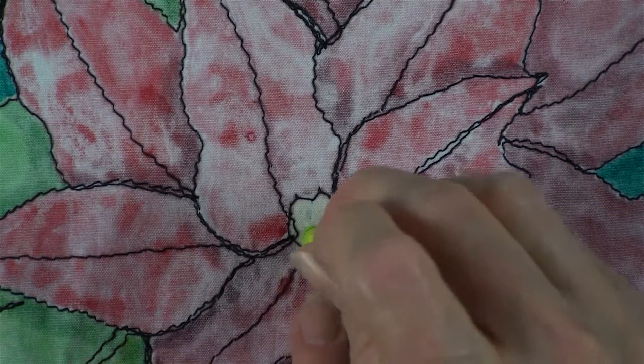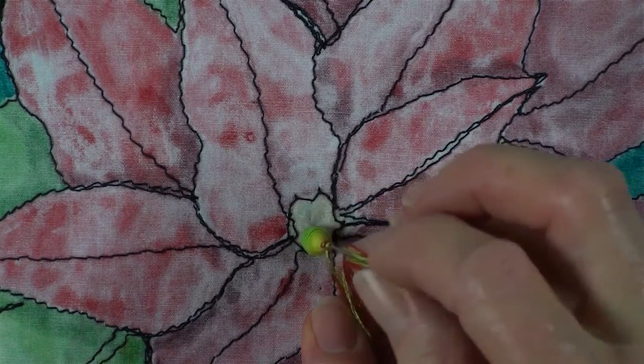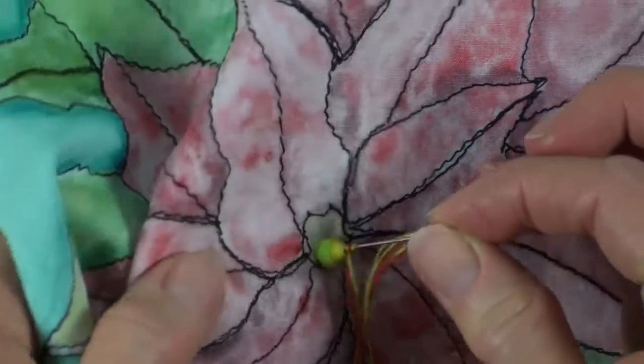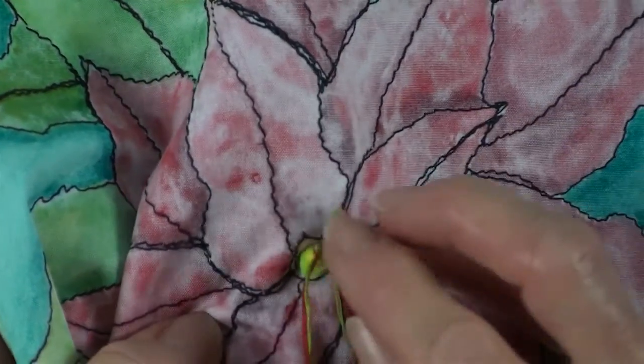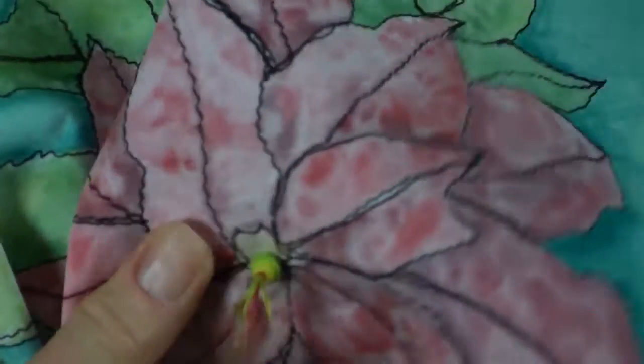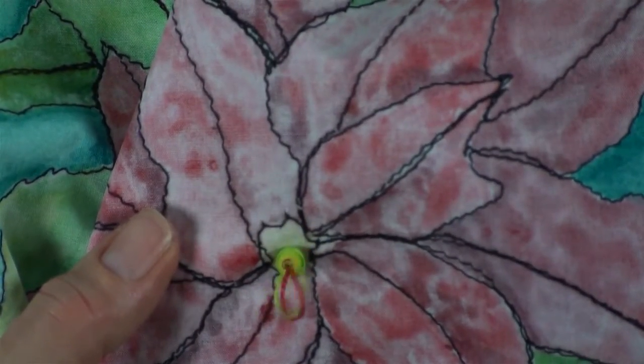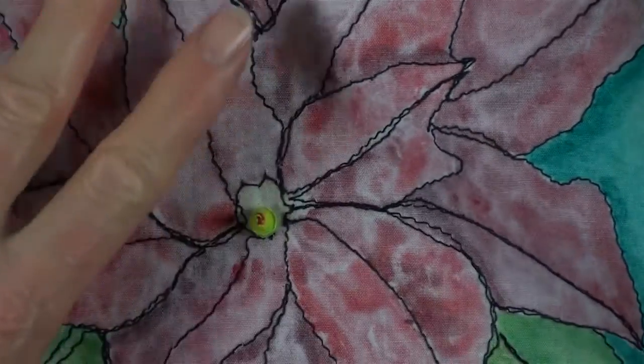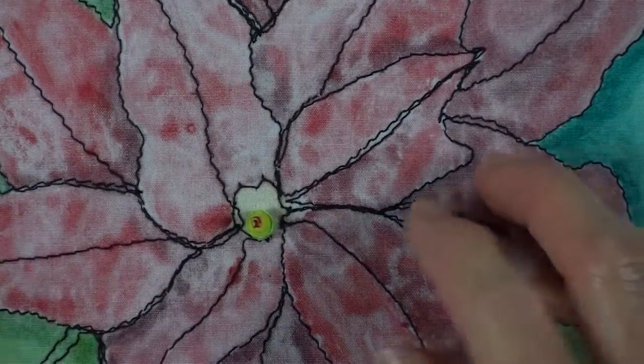Pull the needle to the hole, again, right back where I came up, and I push it down. Then I stick it in, and you have to give it a little tug on the back. I pull it slowly so it doesn't knot up, and then I get this wonderful little French knot right on top of the bead.